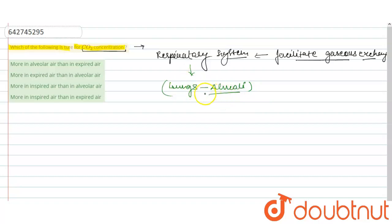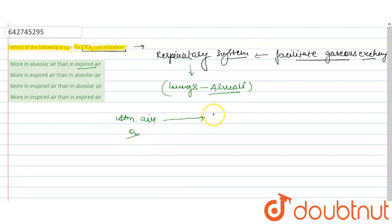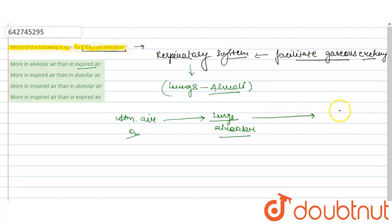When our body gains oxygen from the atmospheric air, we can note the atmospheric air and then this oxygen moves towards the lungs. When we breathe or inhale, the atmospheric oxygen reaches into our lungs and alveoli.